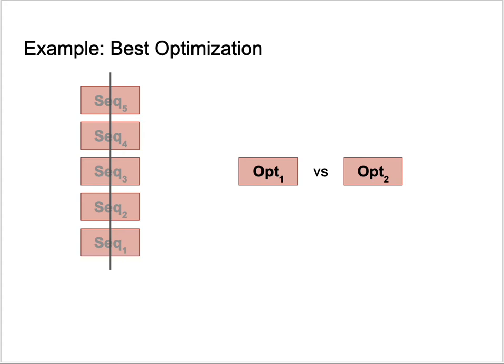For instance, in register allocation we have many synonyms, and in instruction scheduling we have several algorithms that do more or less the same thing. Here we don't want a sequence of different optimizations — we want to find, for a given program, one optimization among a group of synonyms that suits that program best.